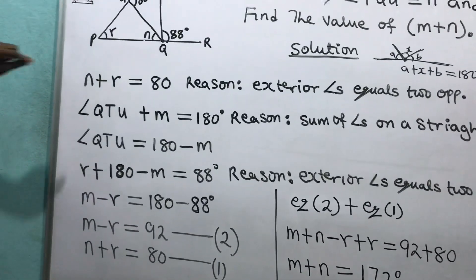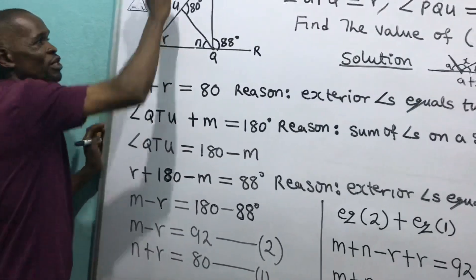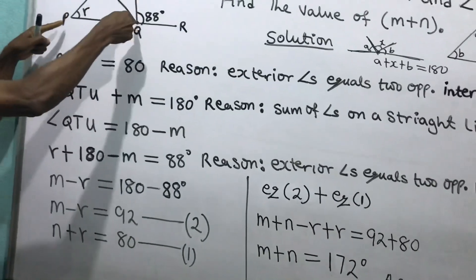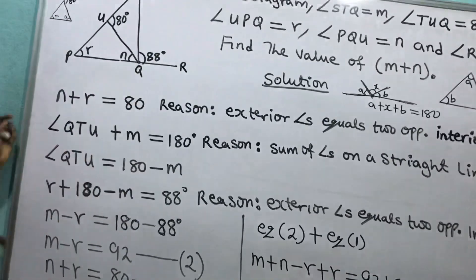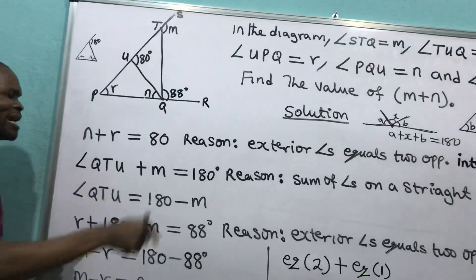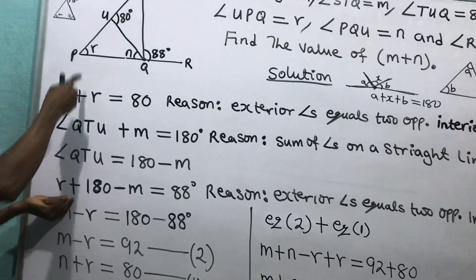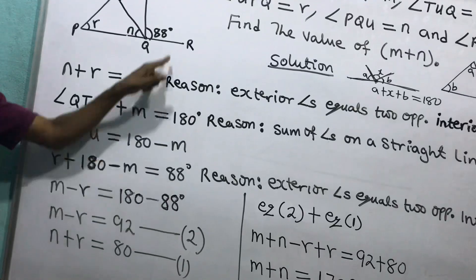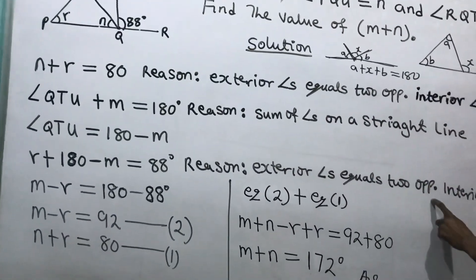I now say R plus (180 minus M) — this angle plus this angle — equals the opposite interior angle. Look at this triangle again. That means this interior angle, opposite to this one, equals the exterior angle. The angle here is R, plus 180 minus M, which is angle Q-T-U. Reason: exterior angle equals to the sum of two opposite interior angles.